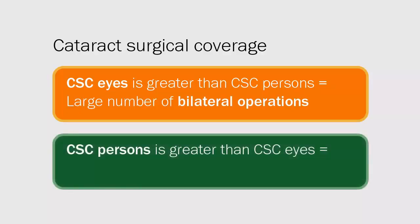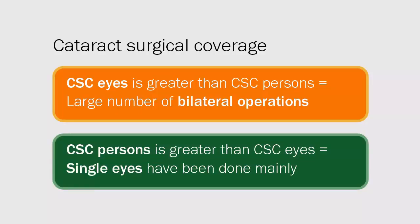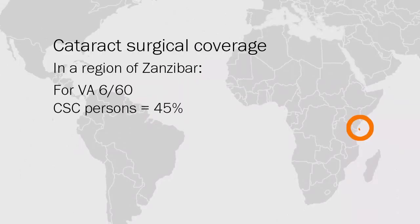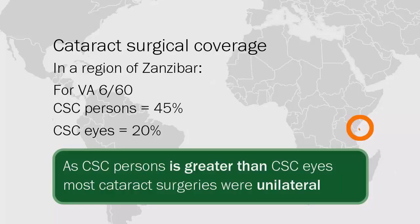If CSC eyes is greater than CSC persons, then a large number of bilateral operations have been carried out. If CSC persons is greater than CSC eyes, then single eyes have been done mainly, which will reduce the prevalence of blindness as per the World Health Organization classification. For example, in a region of Zanzibar, the CSC persons for a visual acuity of less than 6/60 is found to be 45%, meaning only 45% of people who need cataract surgery have been treated. The CSC eyes for the same region is 20%. As CSC persons is greater than CSC eyes, most cataract surgeries carried out have been unilateral operations. Eye care planners would find this information very useful to bring about changes in the way cataract services are carried out in this region.